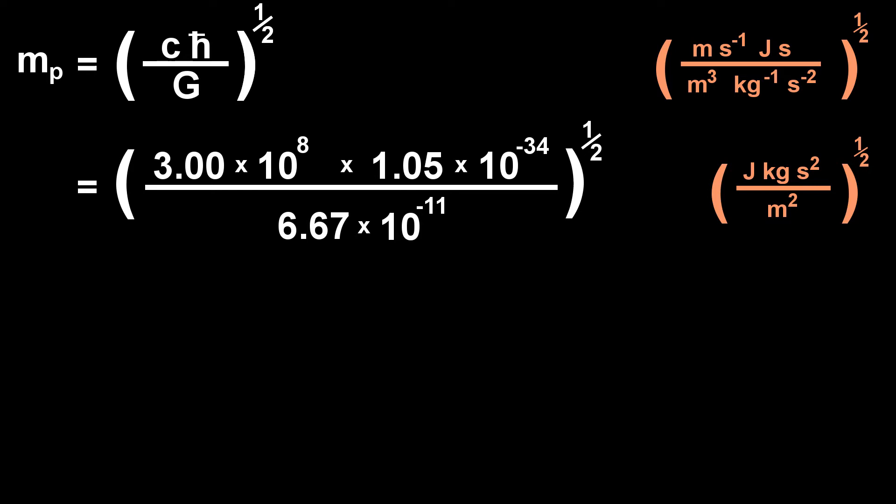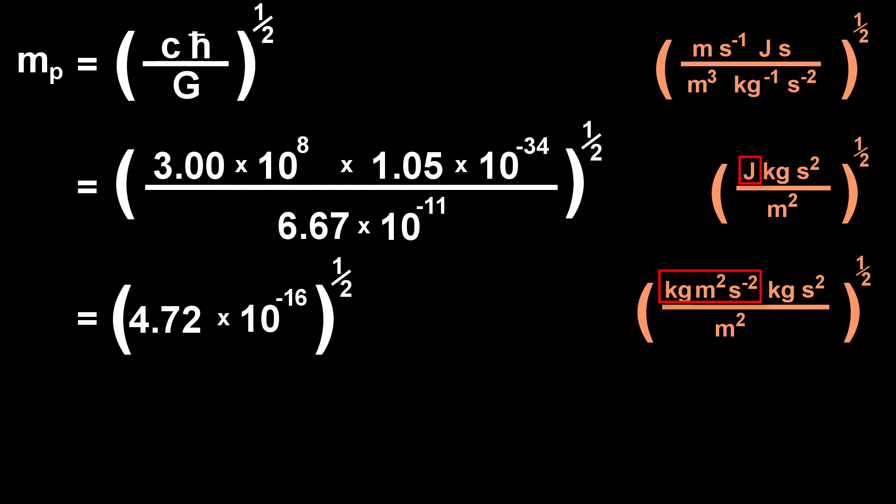A little algebra simplifies the units. Punching numbers into a calculator gives us the next line. The units look a little less tidy now because we've written joules in the SI base units, which will allow us to simplify the next line. Square rooting gives a result in kilograms. Expressed in grams, we get the Planck mass as it's usually written.